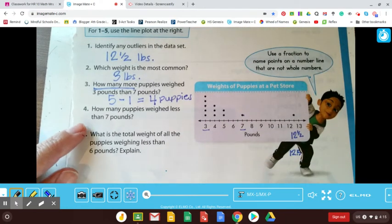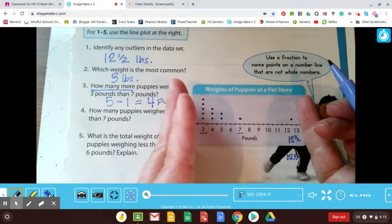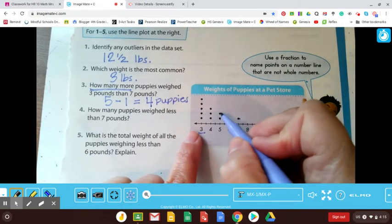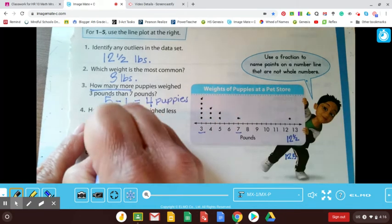And how many puppies weighed less than seven pounds? So here's seven, and here's anything to the left would be less. So let's count: one, two, three, four, five, six, seven, eight, nine, ten. So 10 puppies.